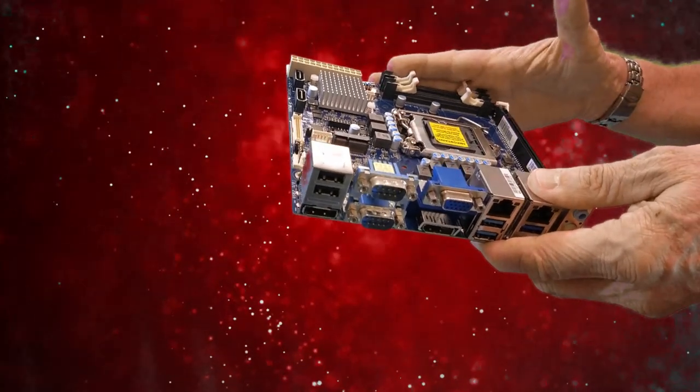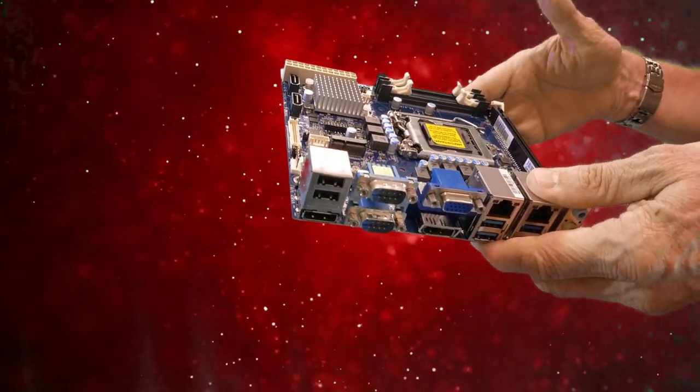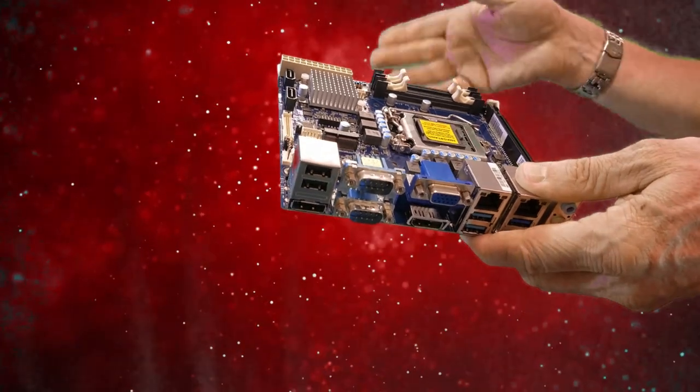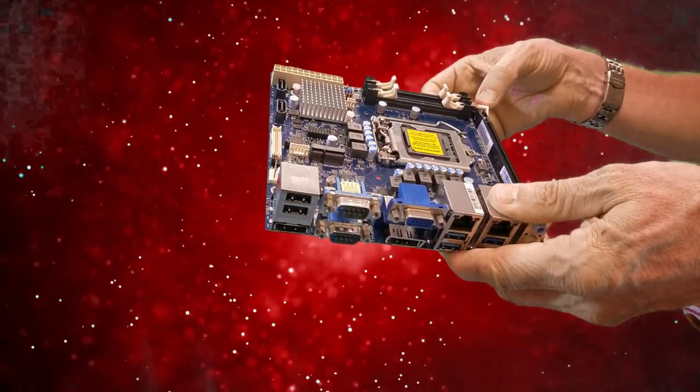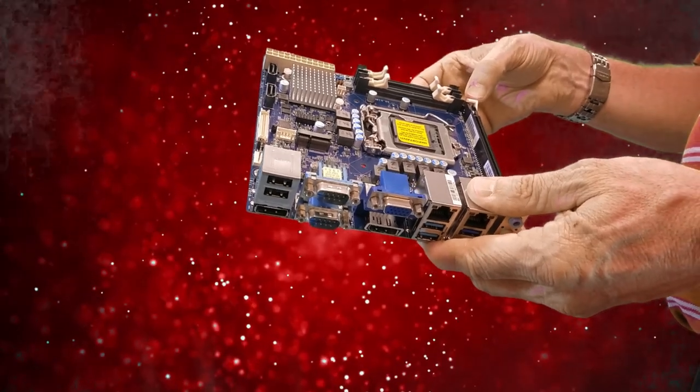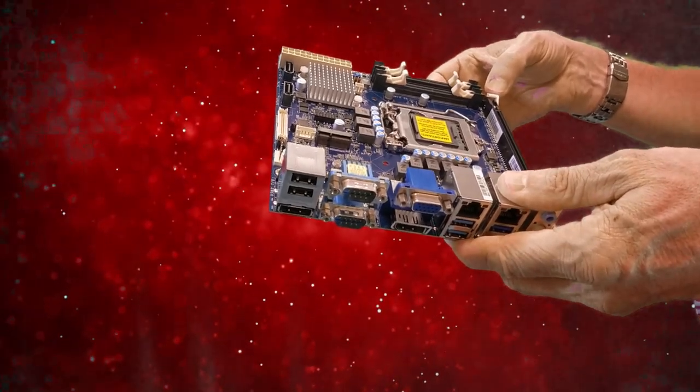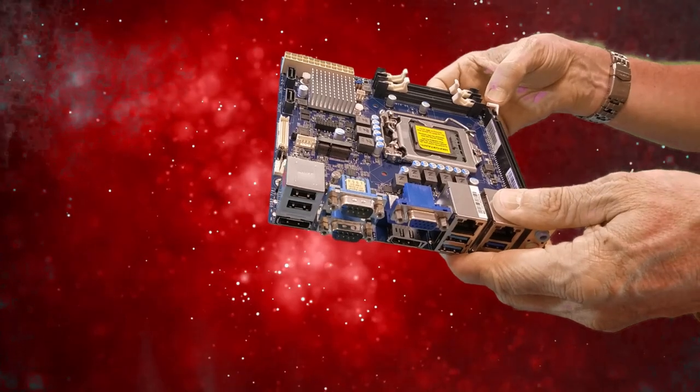The memory on this board, instead of UDIMs, are SODIMs and there are two slots. So you have up to 64 gigs of support for DDR4 memory at 2666 speed, and they can be either ECC or non-ECC unbuffered.